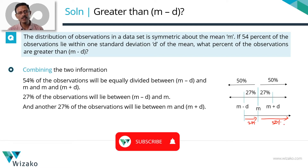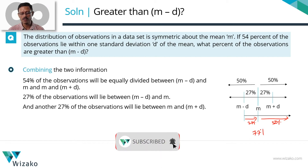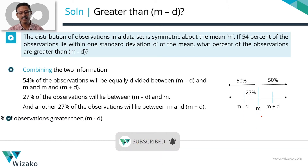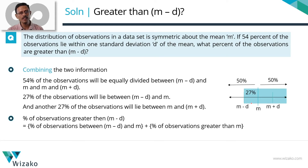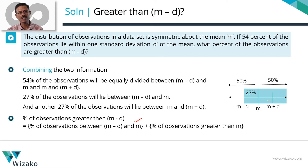So together, how many do we have? 27 plus 50 — that's 77%. So 77% of the observations are greater than mean minus deviation. It's a sum of two parts: the first part is observations between mean minus deviation and mean, which is 27%; and the second part is the percentage greater than the mean, which is 50%. These add up to 77%.